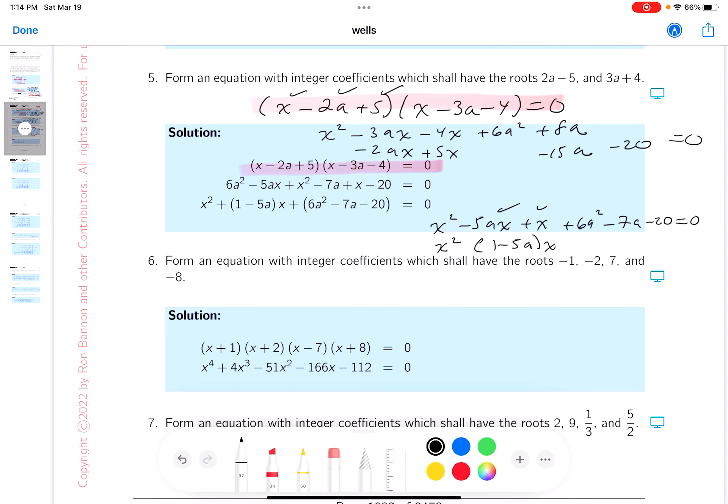I'm going to write it as 1 minus 5a times x. Those two terms are over there. And then you've got this constant term, and I'll put it in parentheses for you. 6a squared minus 7a minus 20.